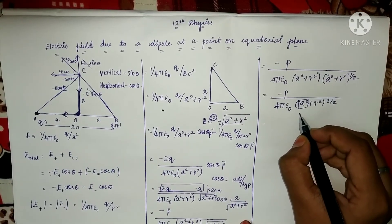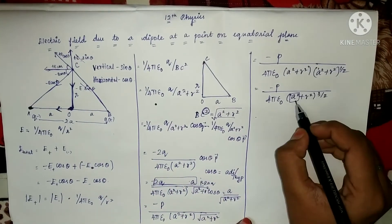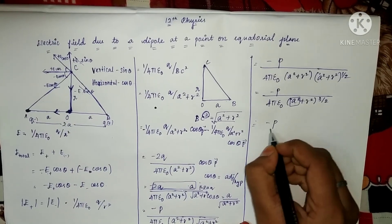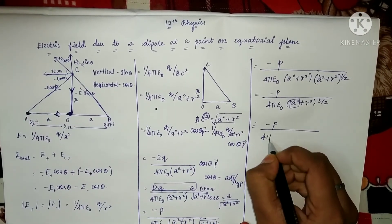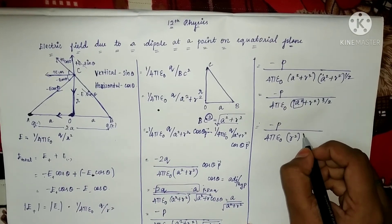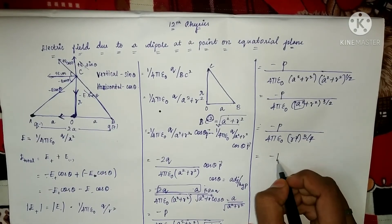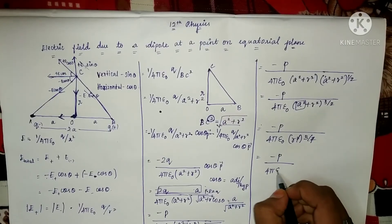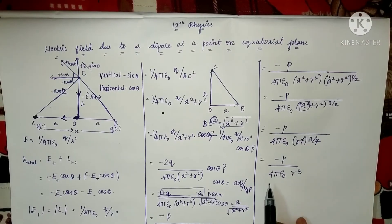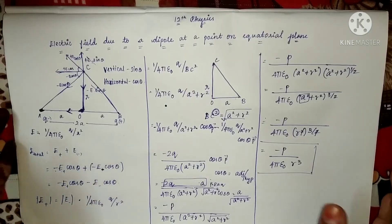The distance a is very small, so a² is negligible compared to r². Considering this approximation: a² plus r² becomes r², so (r²)^(3/2) equals r³. The 2 and 2 cancel, giving the final result: E equals minus p divided by 4π ε₀ r³. This derivation is worth 5 marks. This was the equatorial line derivation.